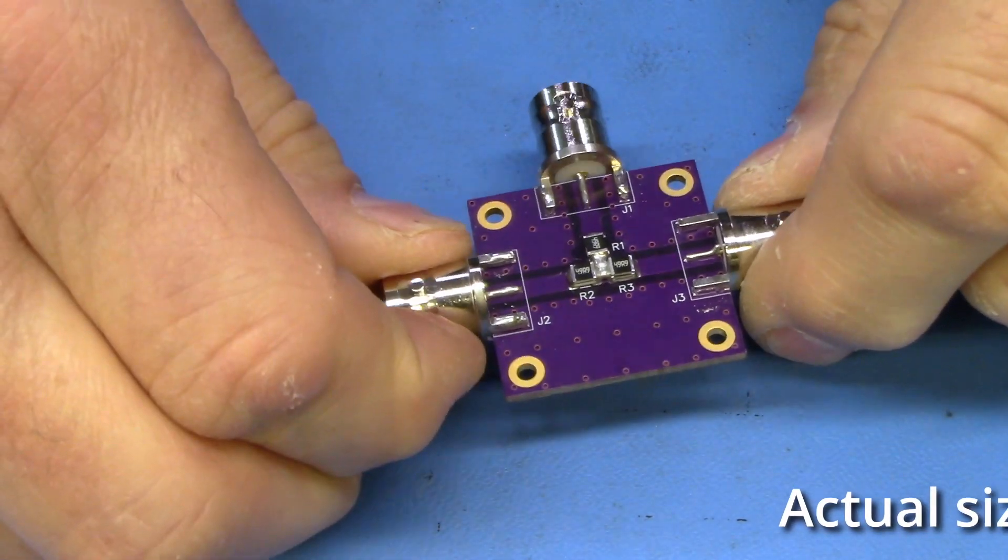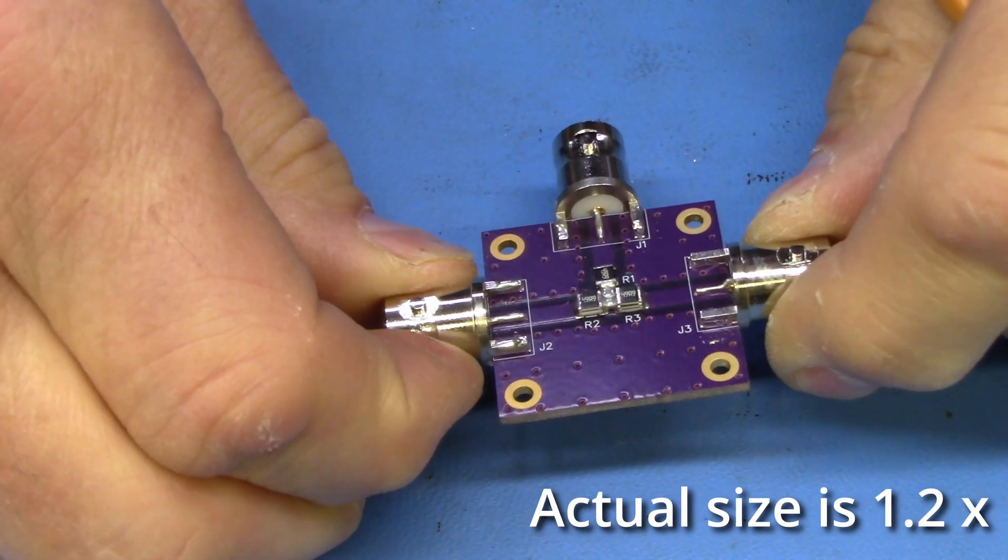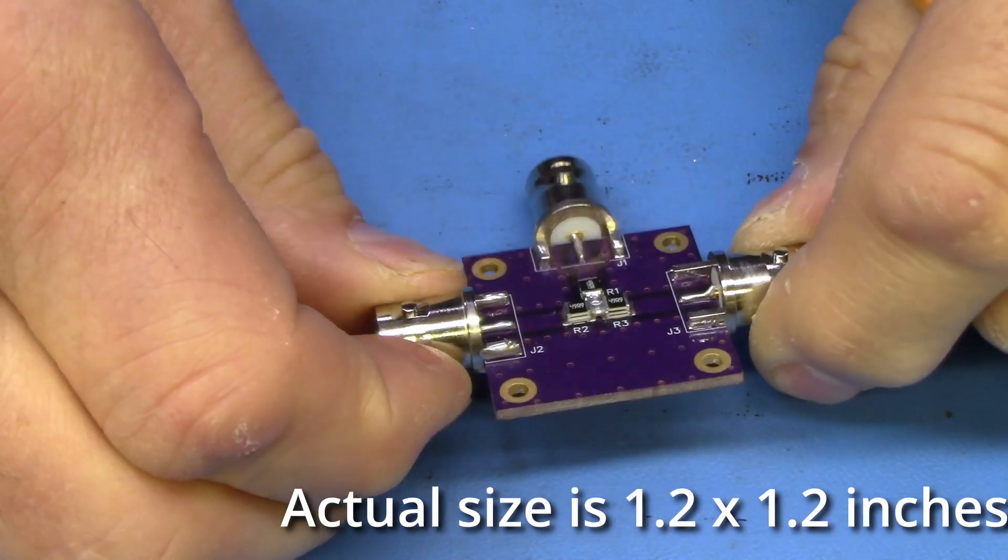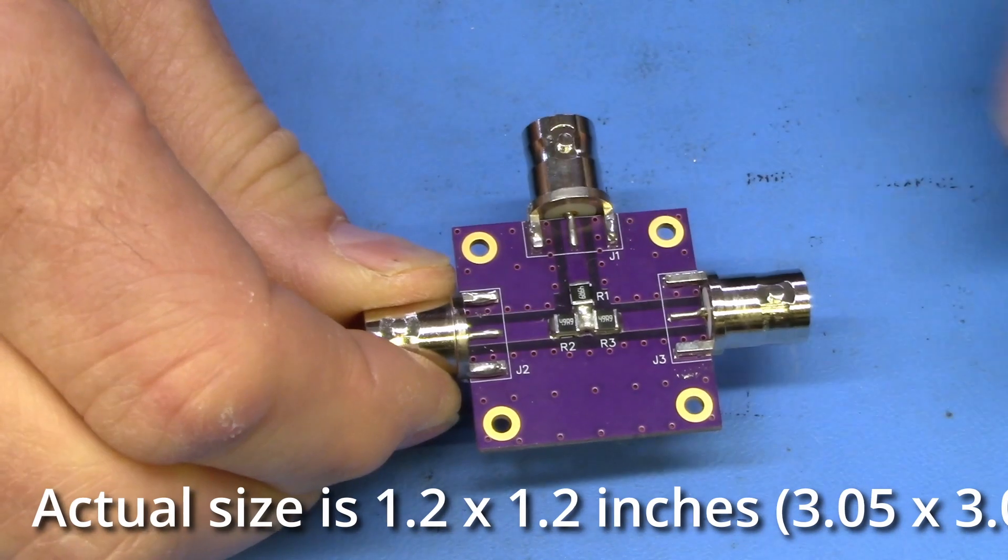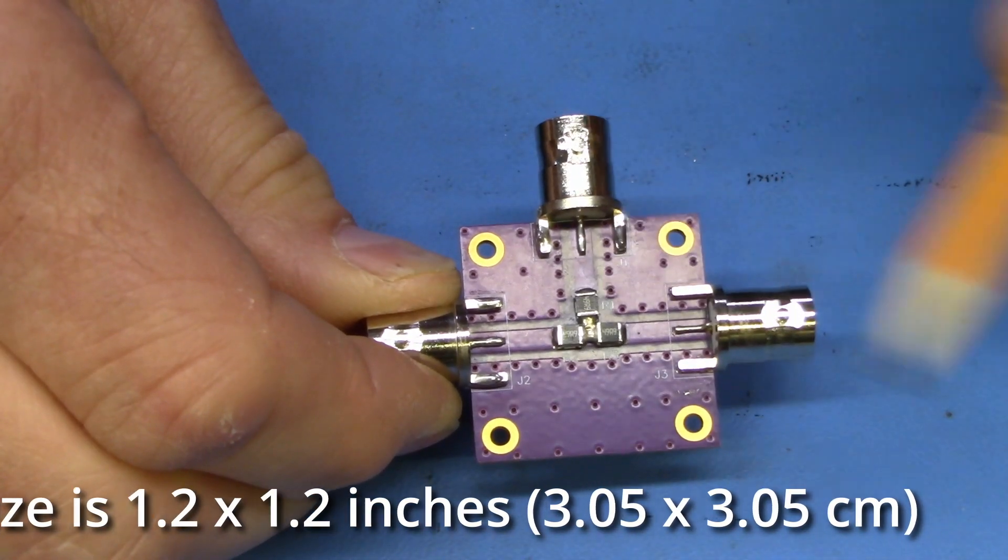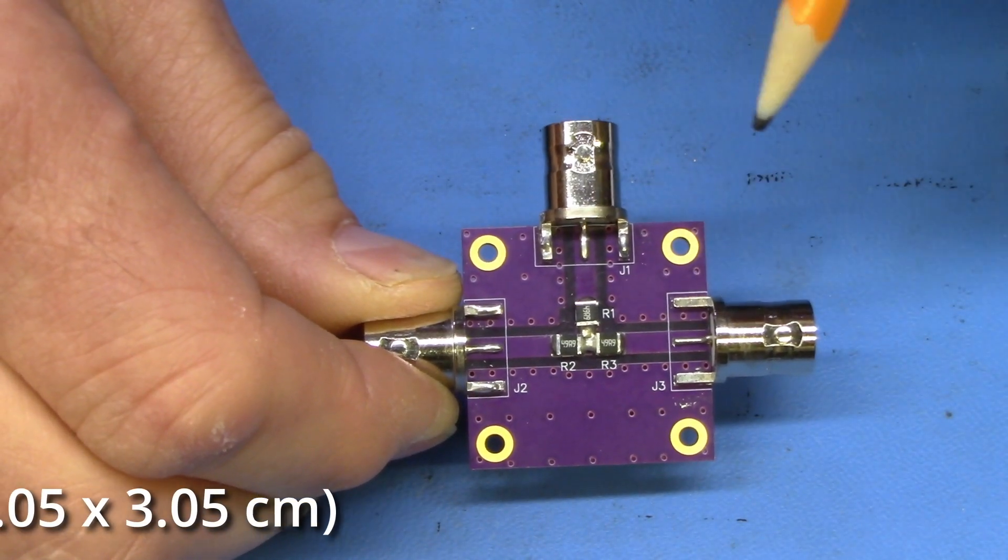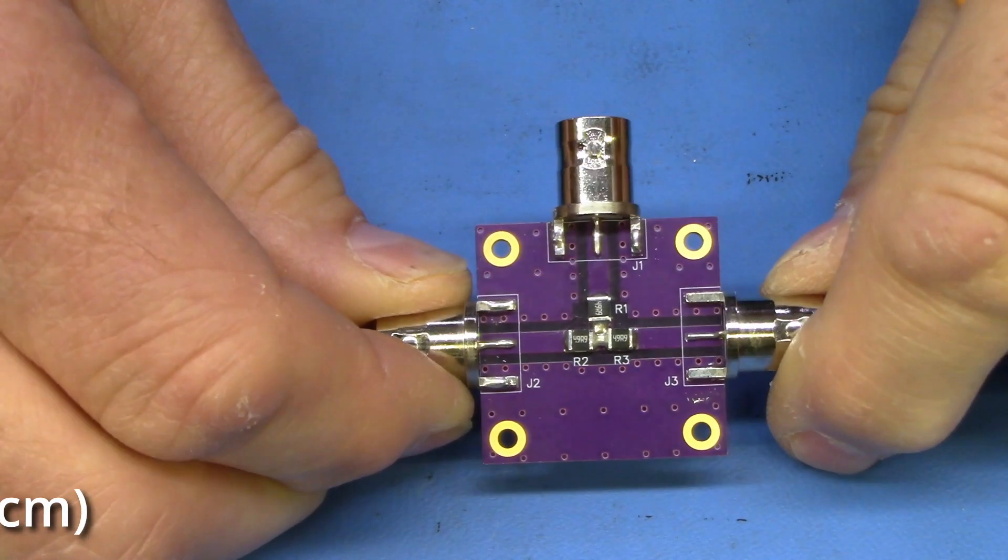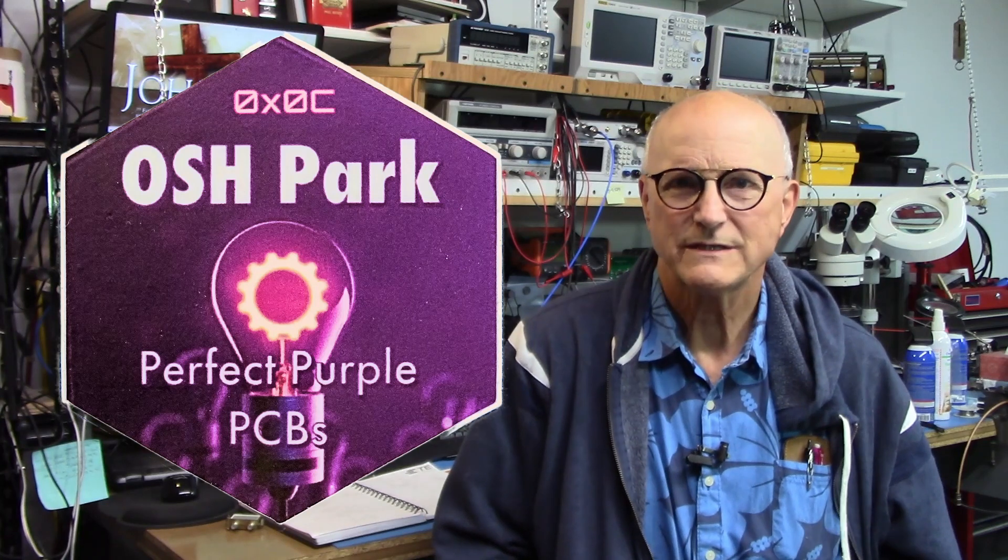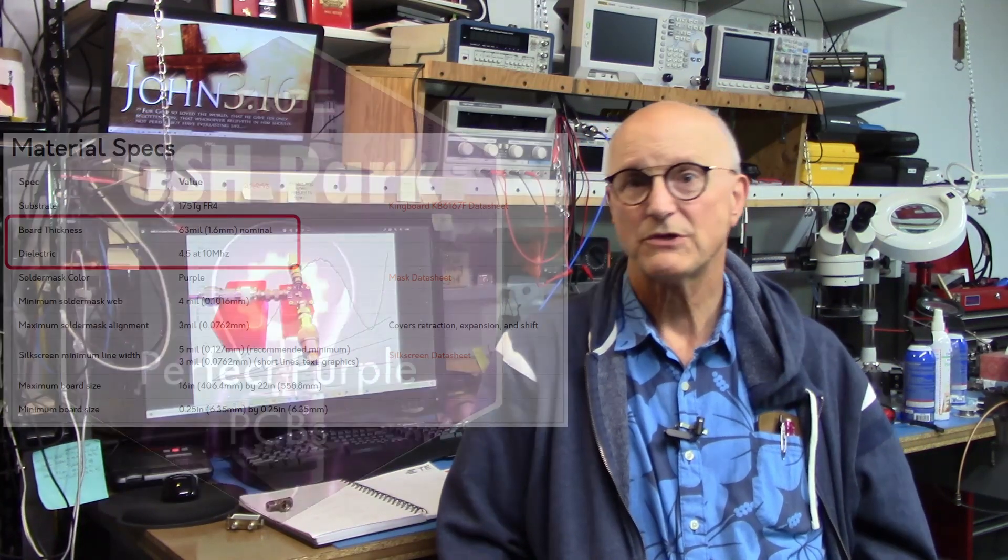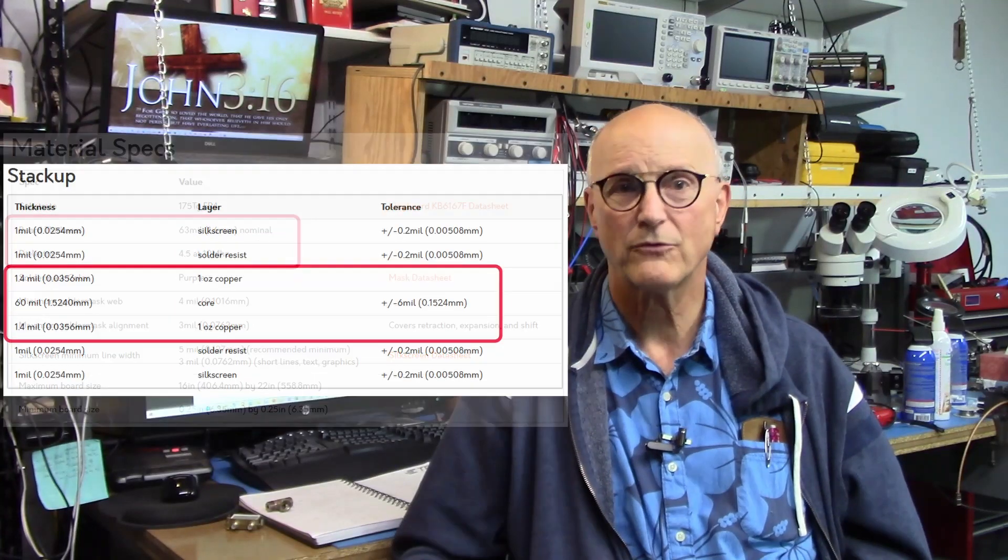I created a 1.5 inch by 1.5 inch or 3.05 centimeter by 3.05 centimeter PCB, which has a place for three edge-mounted BNC connectors and three 1210 package surface mount resistors. The traces running from the connectors to the resistors are impedance-controlled traces with a 50 ohm impedance. I decided to have OSH Park fabricate my PCBs, so I procured the material specifications from their website. I then used the methods that I talked about in my video on impedance-controlled PCB features to arrive at the final trace widths and spacing.